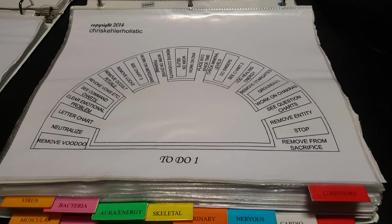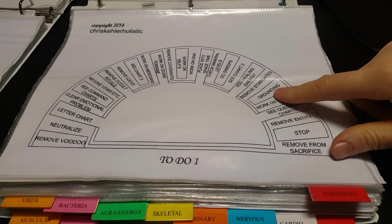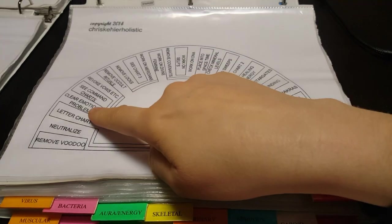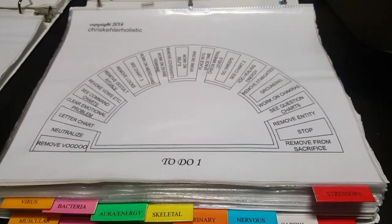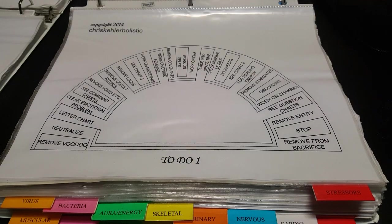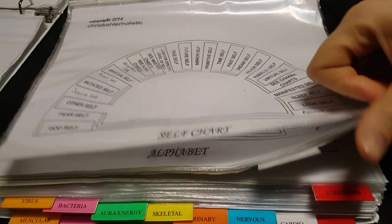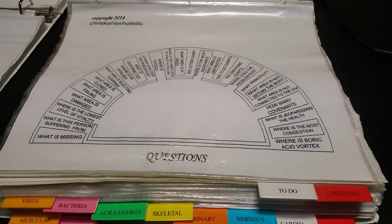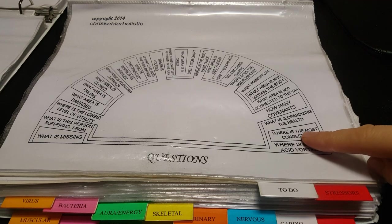If my pendulum swings to the 'what to do' charts, I simply go to the what-to-do chart and douse on what I need to do for you. It could be that a specific area of your body needs to be grounded, it could be that there's an emotional problem that we need to clear, or we could need to work on your chakras. Back to the question chart — if my pendulum swings to one of these questions, for example 'where's the most congestion in your body,' then I go to what we call the master chart.